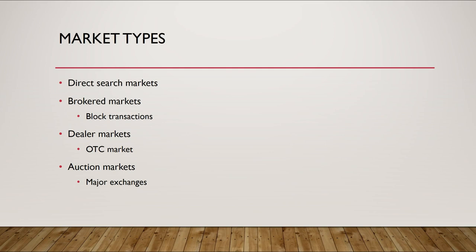On this first slide we have our market types. You can see four different market types: direct search markets, broker markets, dealer markets, and auction markets. Auction markets are probably going to be the most familiar to you.